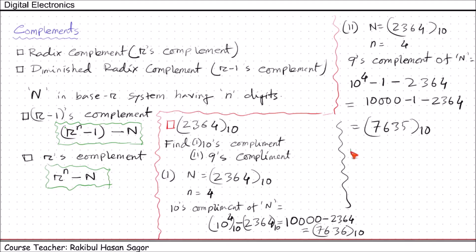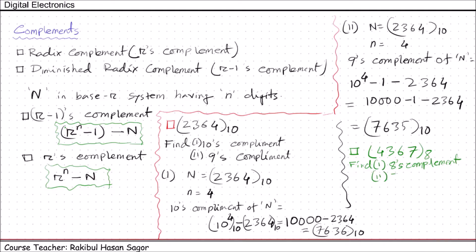Let's see another example using the octal system. Suppose we want to find the R's complement and R minus 1's complement for the octal number 4367. For this case, we need to find the 8's complement and the 7's complement of this number.